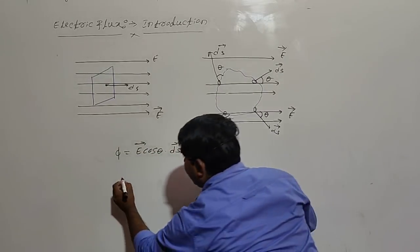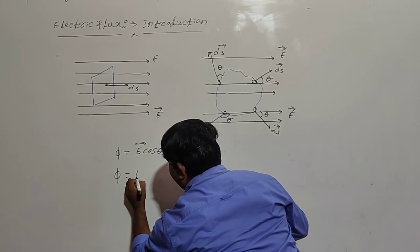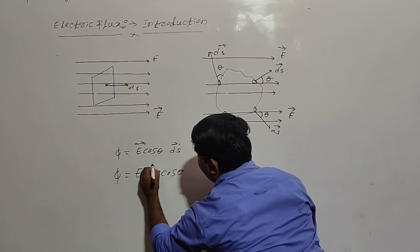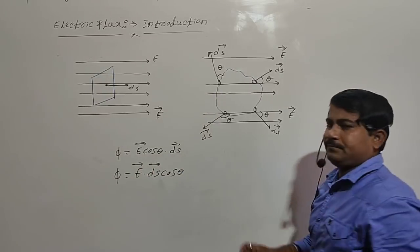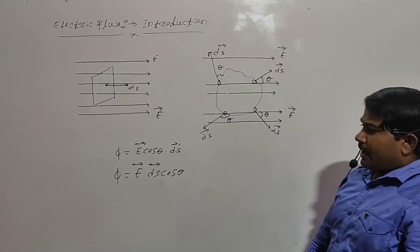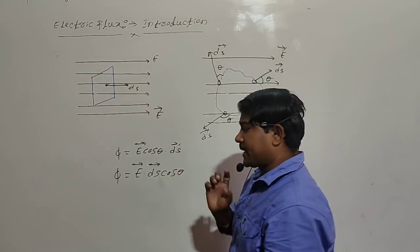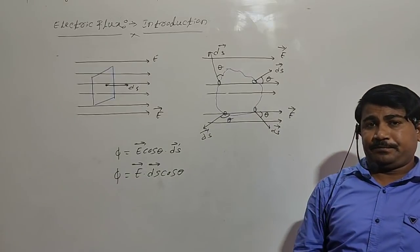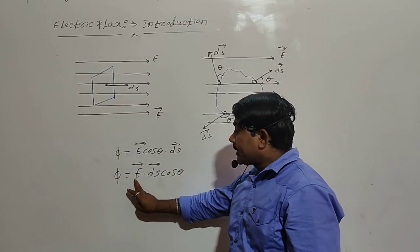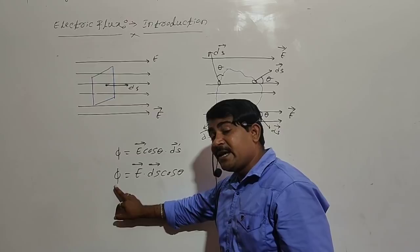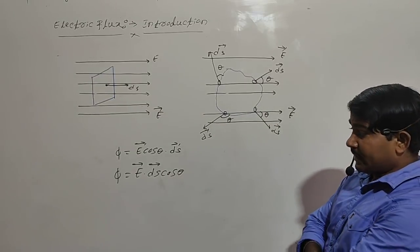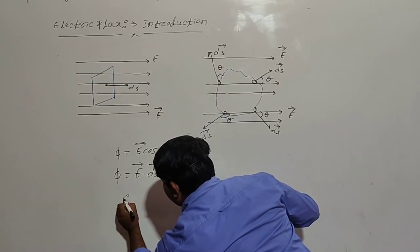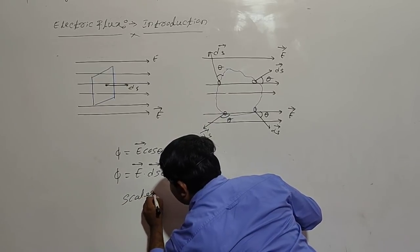Phi equal to E into dS cos theta. Here, electric field intensity is a vector quantity and area vector is also a vector quantity. Vector dot vector gives a scalar. Therefore, electric flux is not a vector quantity — electric flux is a scalar quantity.